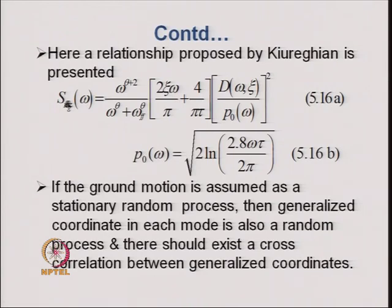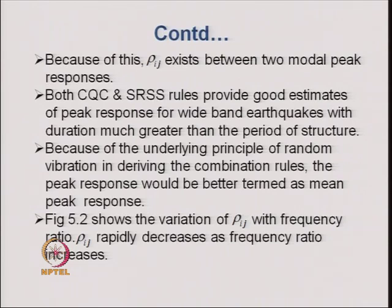If the ground motion is assumed as a stationary random process, then the generalized coordinate in each mode is also a random process and there should exist a cross-correlation between the generalized coordinates. With this background in view, the response spectrum method of analysis can be extended for multi-support excitation, which is what we are going to discuss today. Because there exists a cross-correlation between two modal peak responses, if we consider rho_ij, the CQC rule provides a better estimate than the SRSS rule.